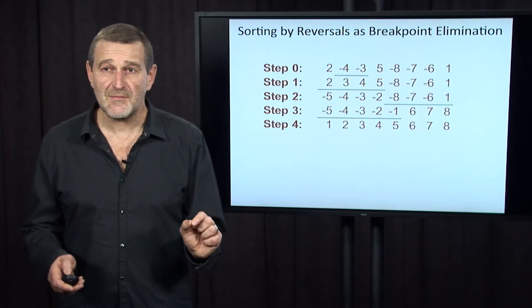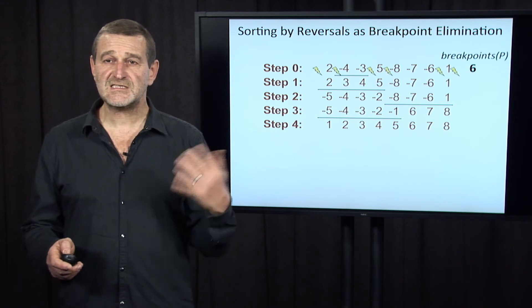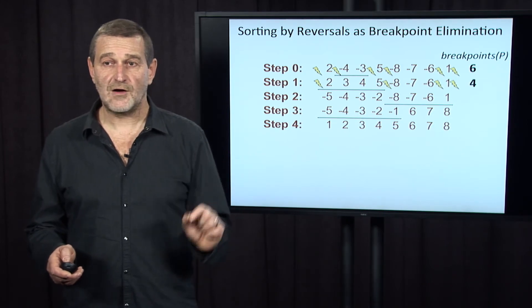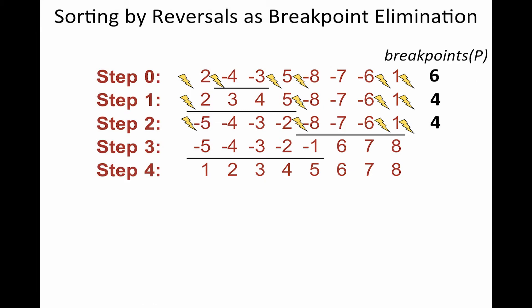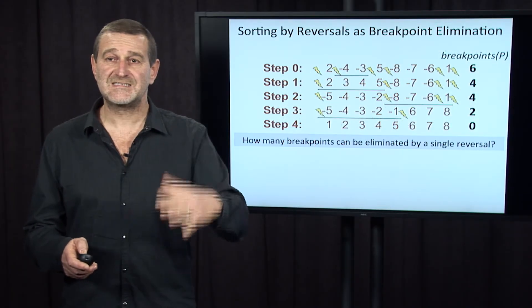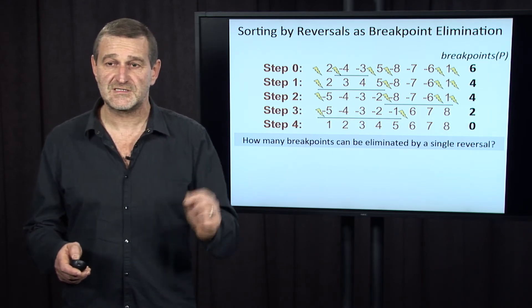Which means that sorting by reversal is essentially breakpoint elimination. Let's see how it works. So let's start from the initial permutation that has six breakpoints. We move next, there are only four breakpoints left. We move left, again, four breakpoints left. We move further, two breakpoints. And finally, in the identity permutation, zero breakpoints. Which means that every sorting by reversal should reduce the number of breakpoints from six to zero in this case. We don't know what sequence of reversal is minimal, but we know that each of them will result in reduction of the number of breakpoints to zero.